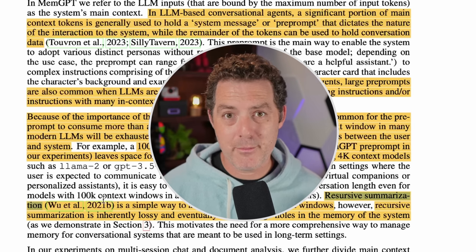They ran experiments in two ways: testing against long-term chat dialogues — thousands, tens of thousands of messages — and against document retrieval. For conversational agents, they looked at two main factors: consistency (the agent should maintain conversational coherence — new facts, preferences, and events should align with prior statements) and engagement (the agent should draw on long-term knowledge to personalize responses, making dialogue more natural by referencing prior conversations).